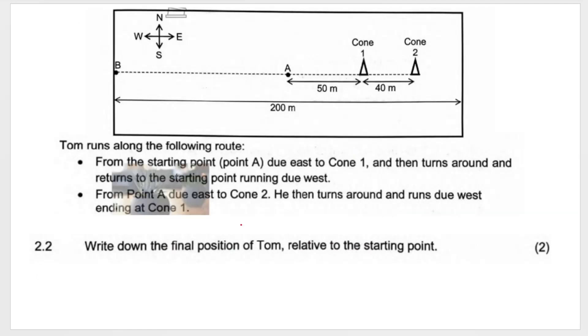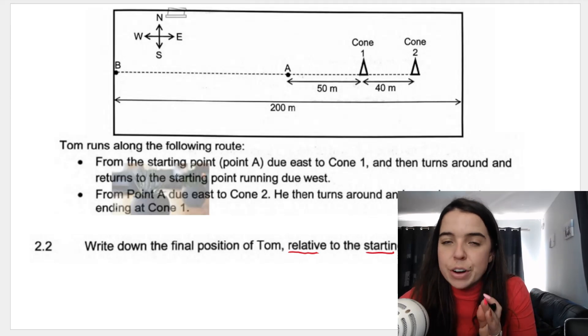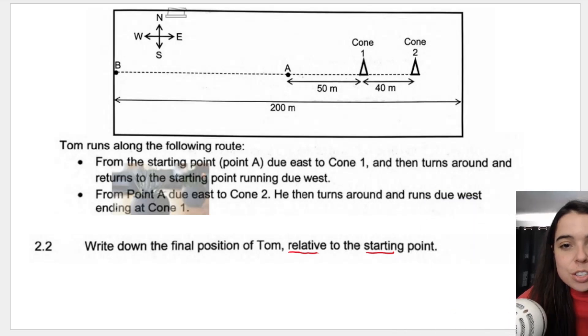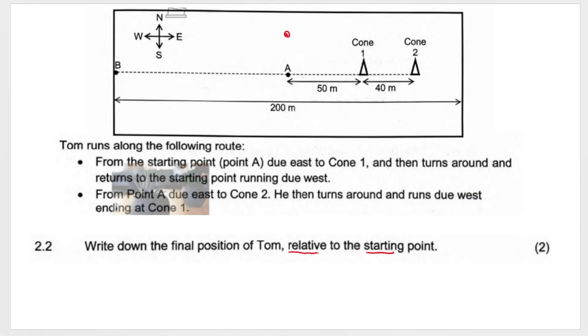Question 2.2 says write down the final position of Tom relative to the starting point. When they say relative to the starting point, that is your zero reference. Think of it as that is the point where we're going to refer back to. Remember, he started at A, then he ran to cone one, then he went back to A, then he went to cone two, and then he ended at cone one. So you start here, you end here. So Tom ended over here at cone one and he started over here. So he ended 50 meters to the east.